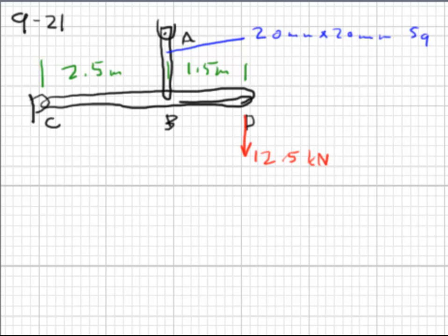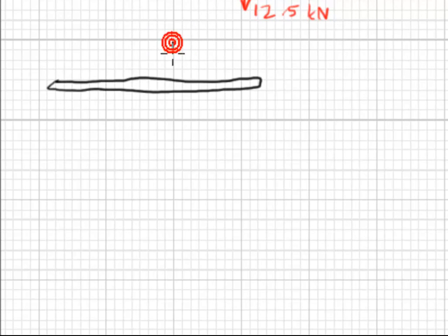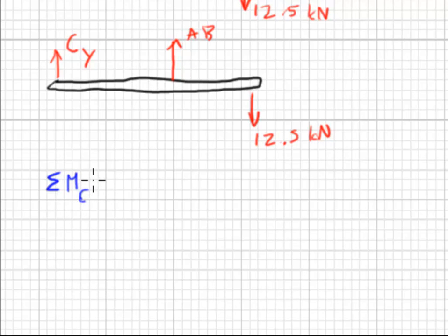This we do by making a free body diagram. We need force AB here, 12.5 kilonewtons here, and C in the Y direction here. There are no X forces. In fact, we can simply take the moments about point C, and then we don't have to consider the forces at C at all.